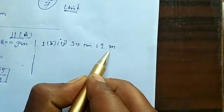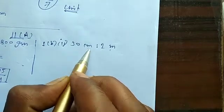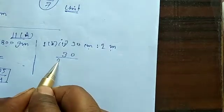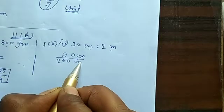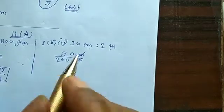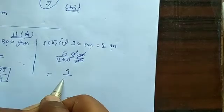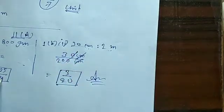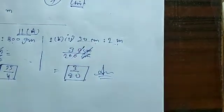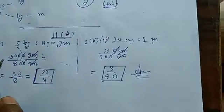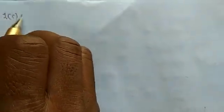Next: 30 centimeter and 2 meter. 30 is already in centimeters, so we convert 2 meters to centimeters: 2 meters equals 200 centimeters. We write 30 upon 200; both units cancel since ratio has no unit. The zeros cancel giving 3 upon 20. This is the lowest form, so the ratio is 3 ratio 20.